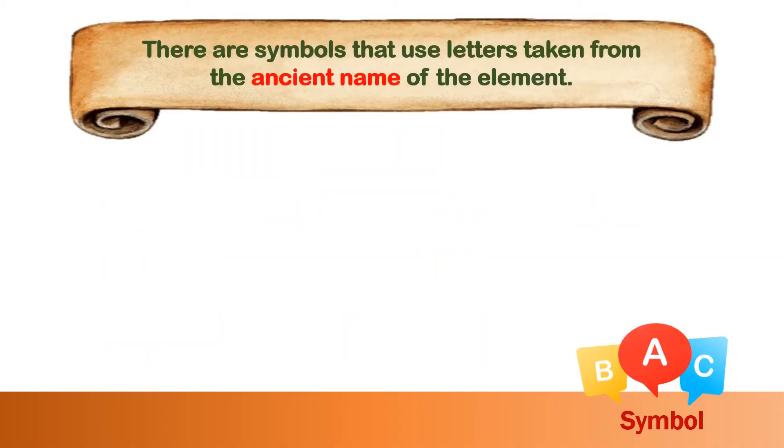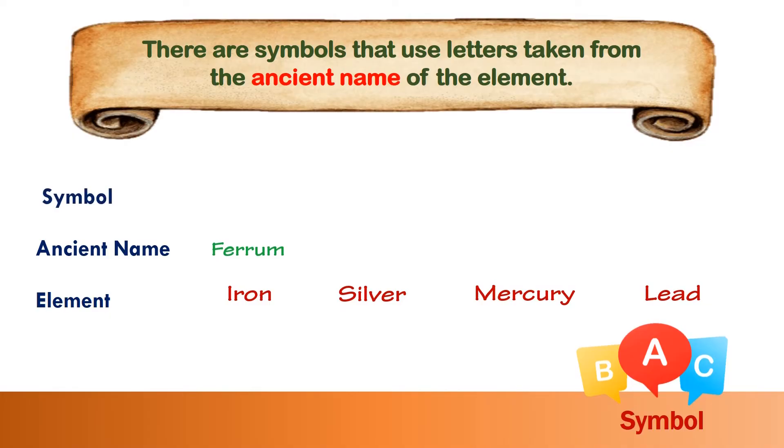There are symbols that use letters taken from the ancient name of the element. Elements such as iron, silver, mercury, and lead have ancient names. The ancient name of iron is ferrum, and its symbol is Fe.